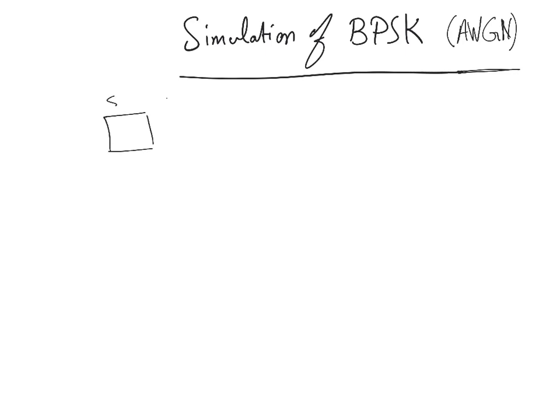In an actual BPSK communication system under additive white Gaussian noise, the steps are as follows. We have a source generating binary bits — ones and zeros — each with probability equal to one half. These bits are represented in the polar case, so they are generated as plus one or minus one.